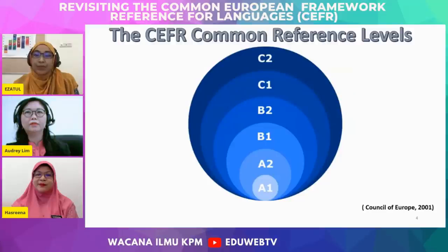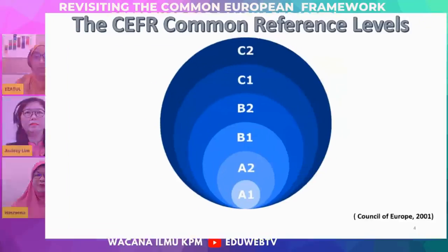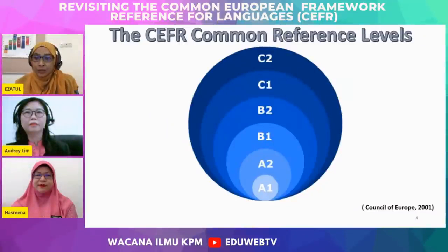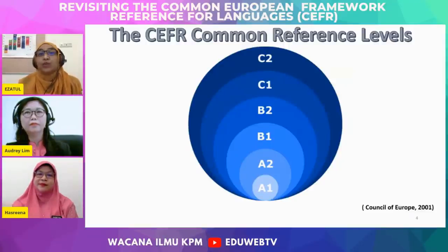The CEFR presents six common reference levels. It basically has three broad bands — A, B, and C — which are loosely similar to beginner, intermediate, and advanced levels, though the CEFR levels are more precise. They are called Basic, Independent, and Proficient. The Basic User levels are A1 and A2, the Independent User levels are B1 and B2, and the Proficient User levels are C1 and C2. We will explain the six levels in more detail later on.